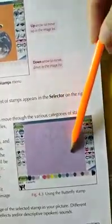Here an outline will appear. Then you have to select the color from here. There are several other options in the selector pane, which is that you can move to the right and left, and it will change the categories of stamps.